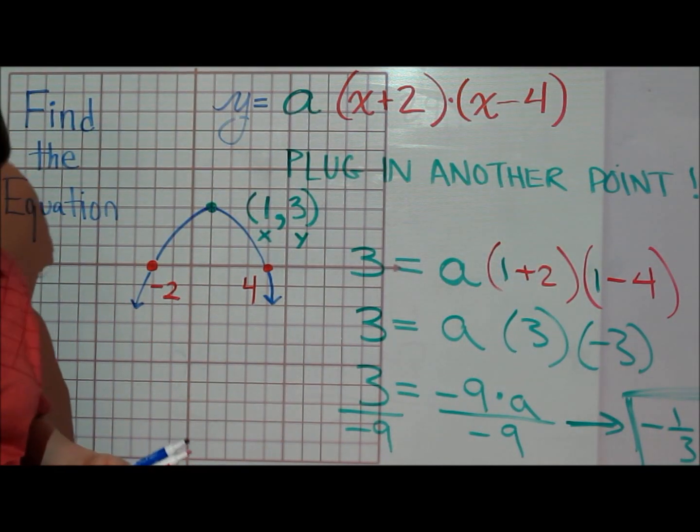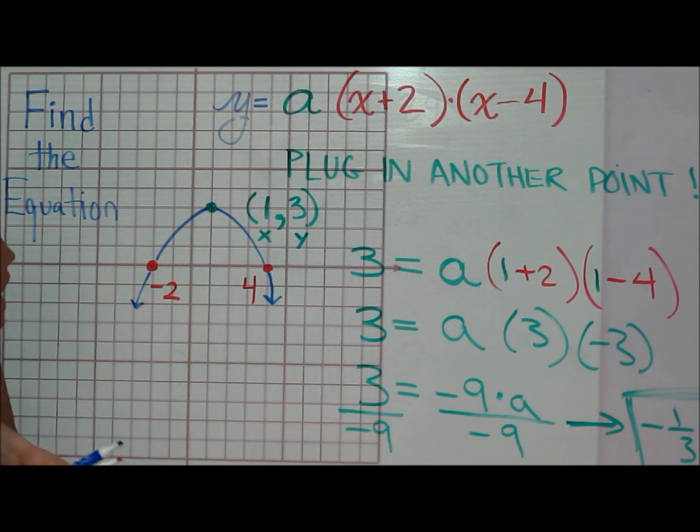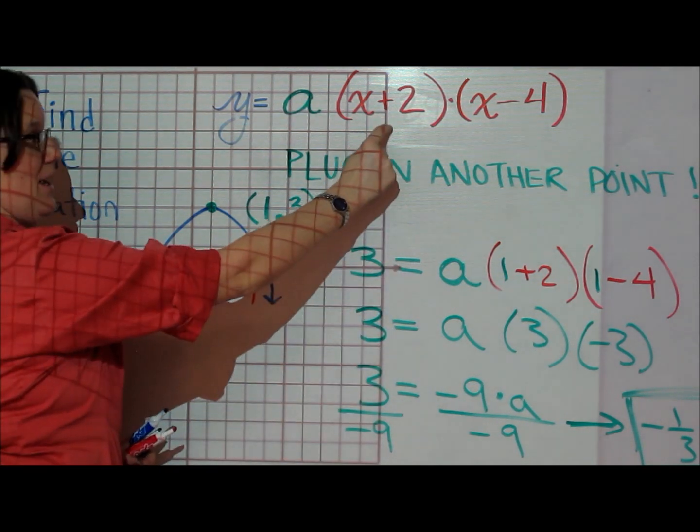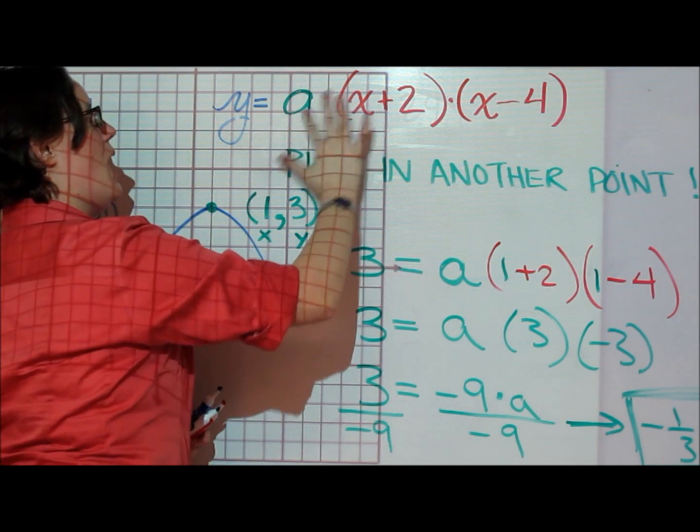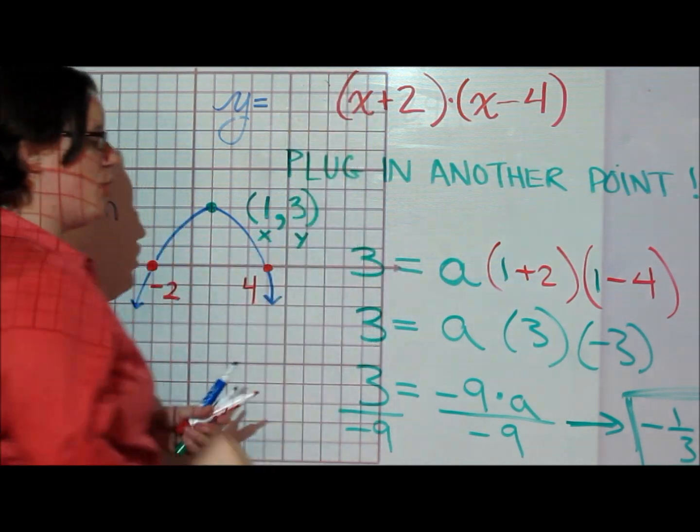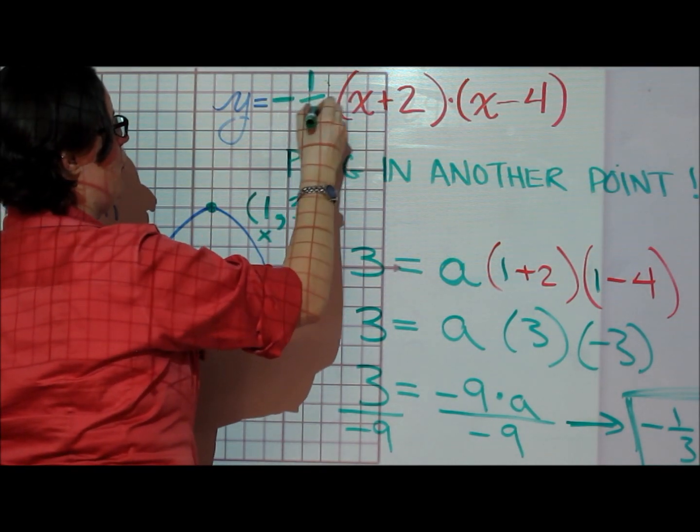That gives me enough information to know the exact equation of this parabola. I already knew it had an x-intercept at negative 2 and positive 4, so I had those factors. I now know it also has an a-value of negative 1 third.